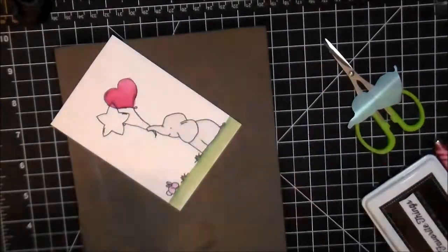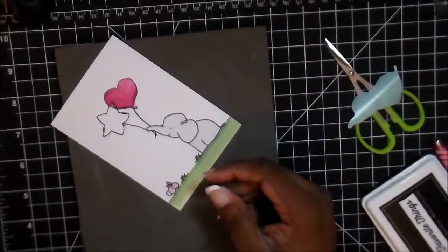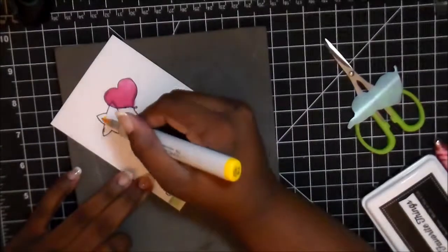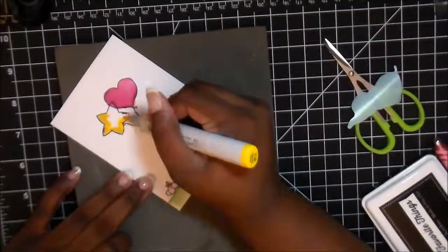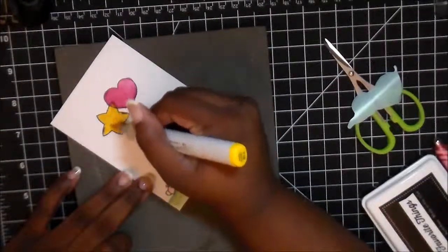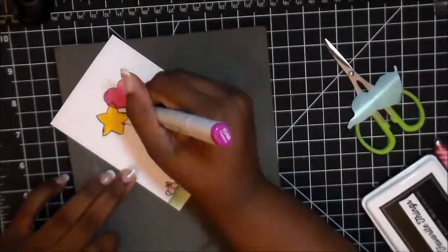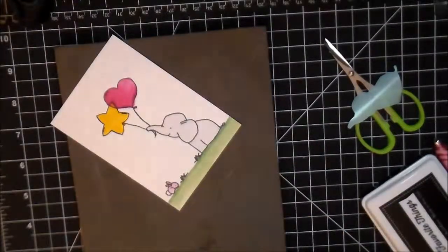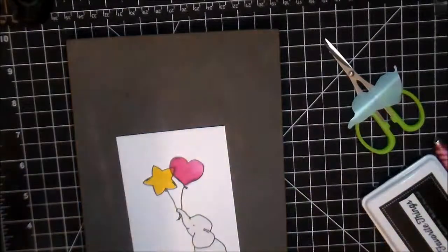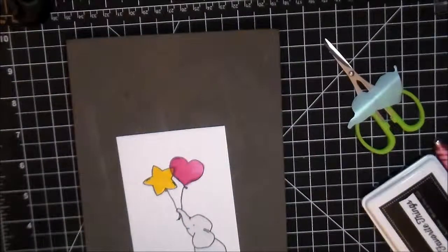The great part about stamps is a lot of times they'll put lines on the actual stamp to mimic where shading should be and that's where I was putting the darker shade of the pink to give it shadow between the yellow and the pink balloon.